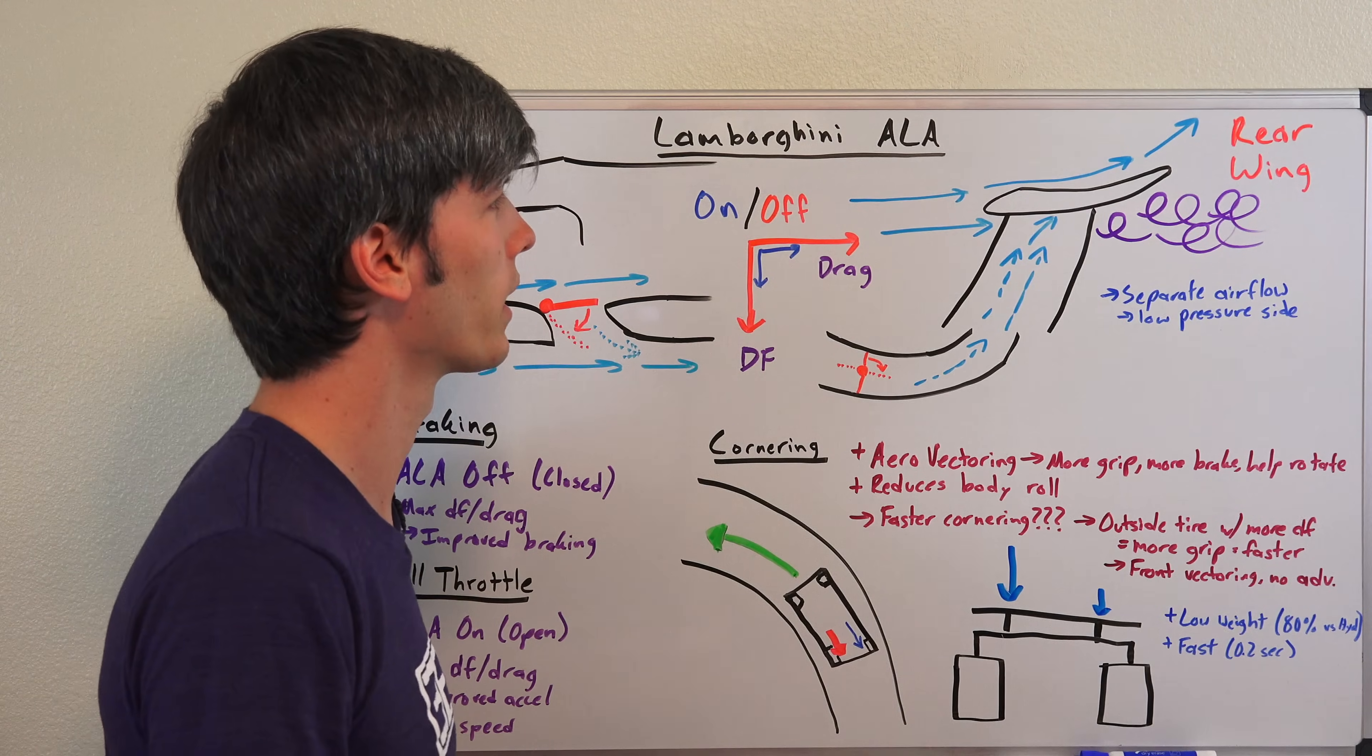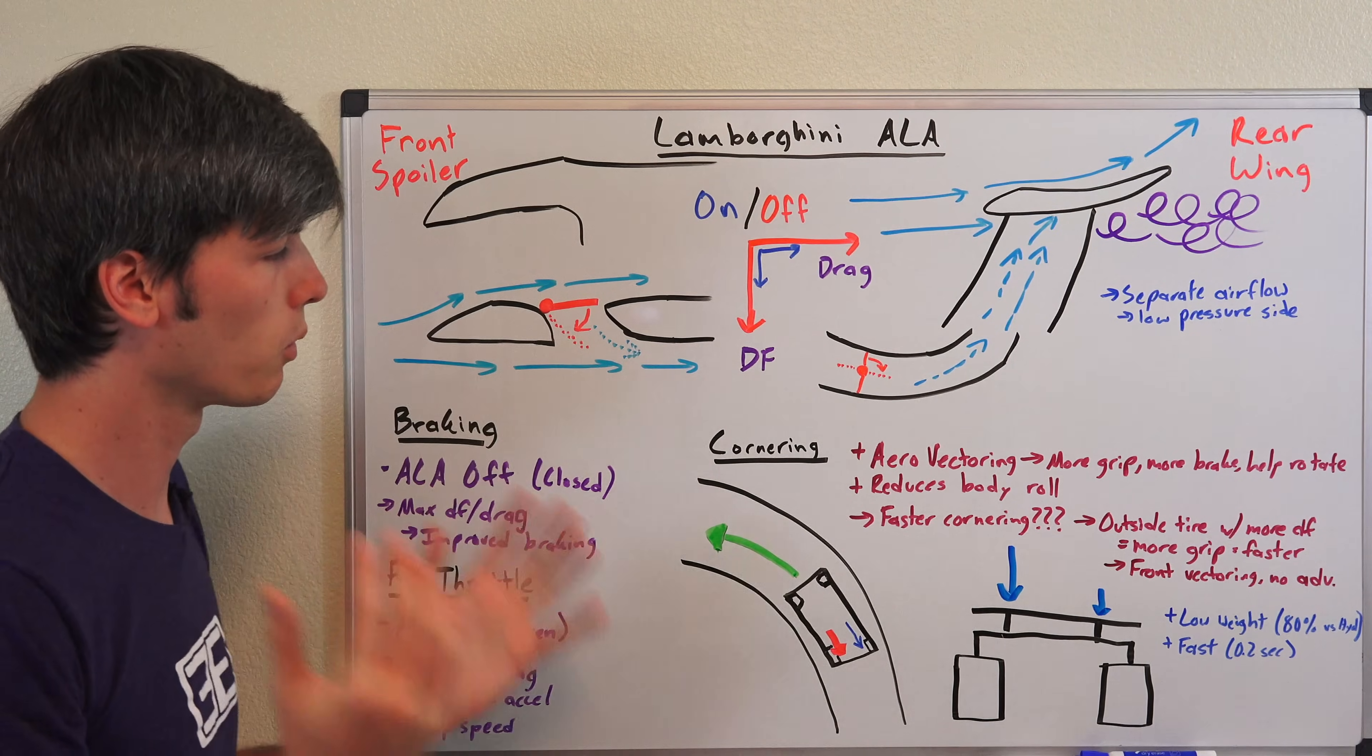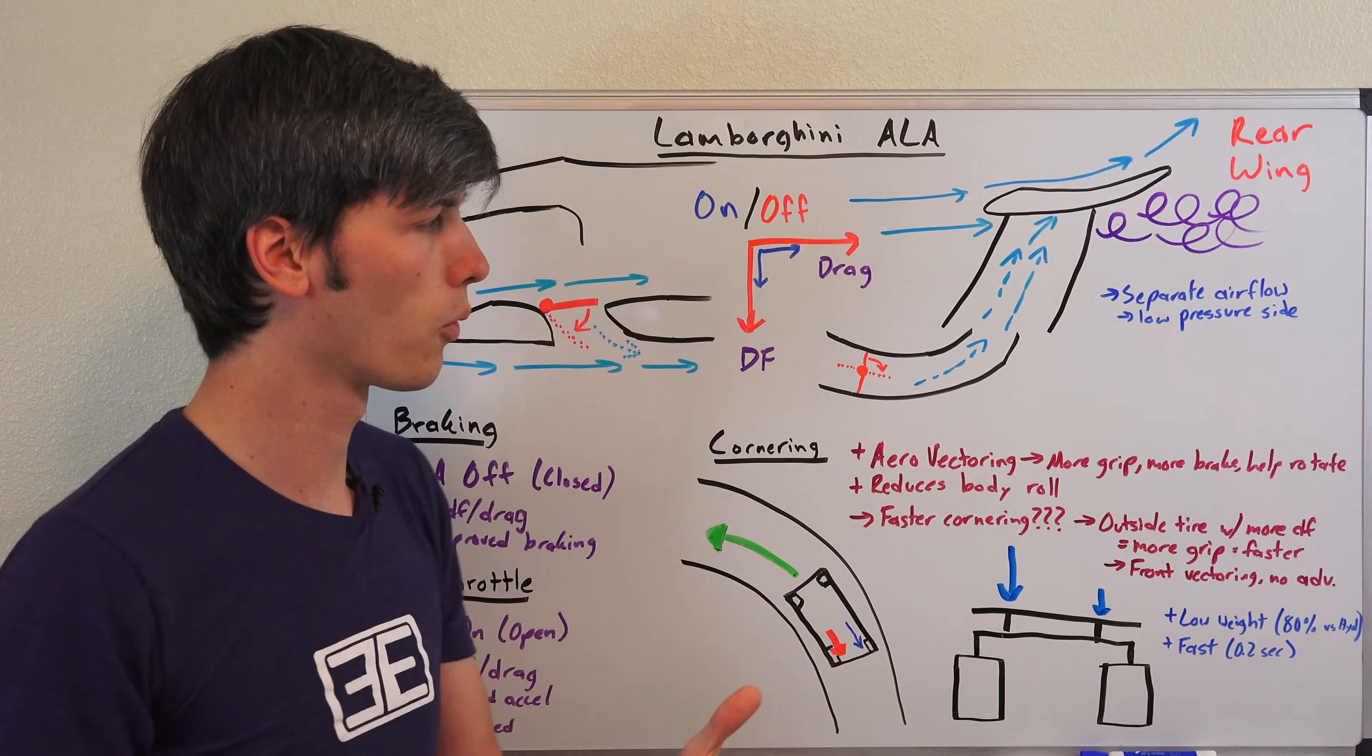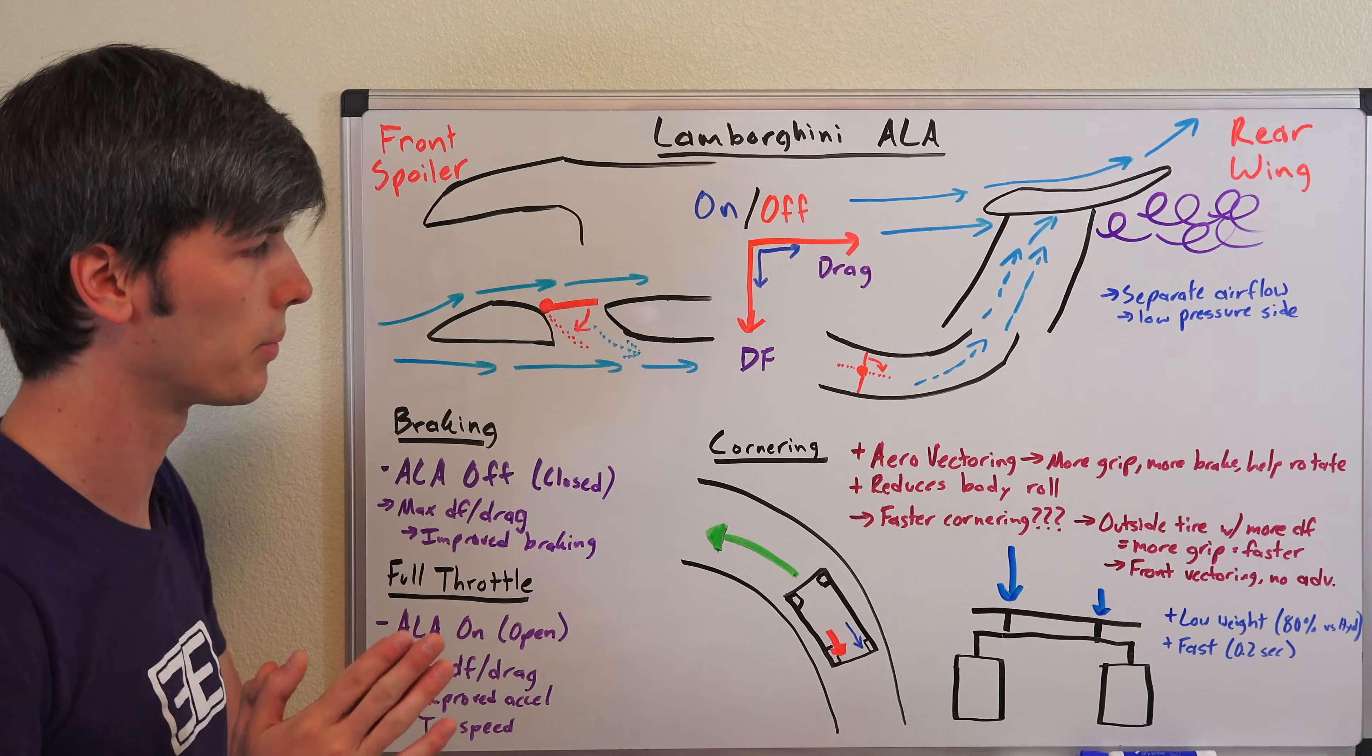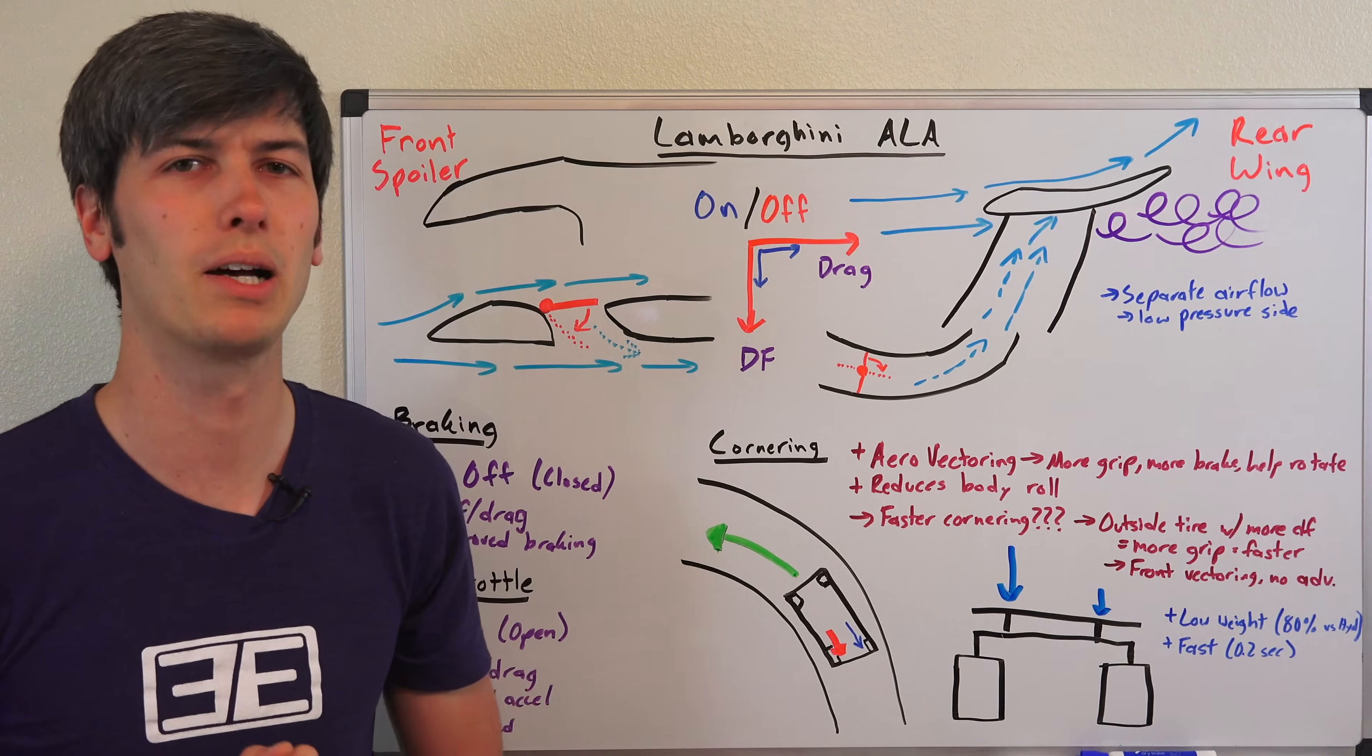To me the most logical approach if you want the highest cornering speed is you want the most downforce you can possibly have. So you would do that by just simply closing off these valves and allowing for maximum downforce. If you have any questions or comments feel free to leave them below. Thanks for watching.